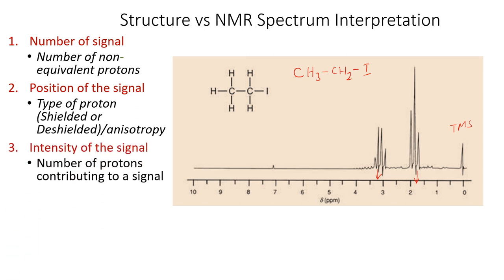Thirdly, the intensity of the signal. In general NMR spectroscopy, the area under the peak is equivalent to the number of protons contributing to that signal. By calculating the area under the peak, we can determine how many protons are contributing to each signal — that is, the intensity of the proton signal.